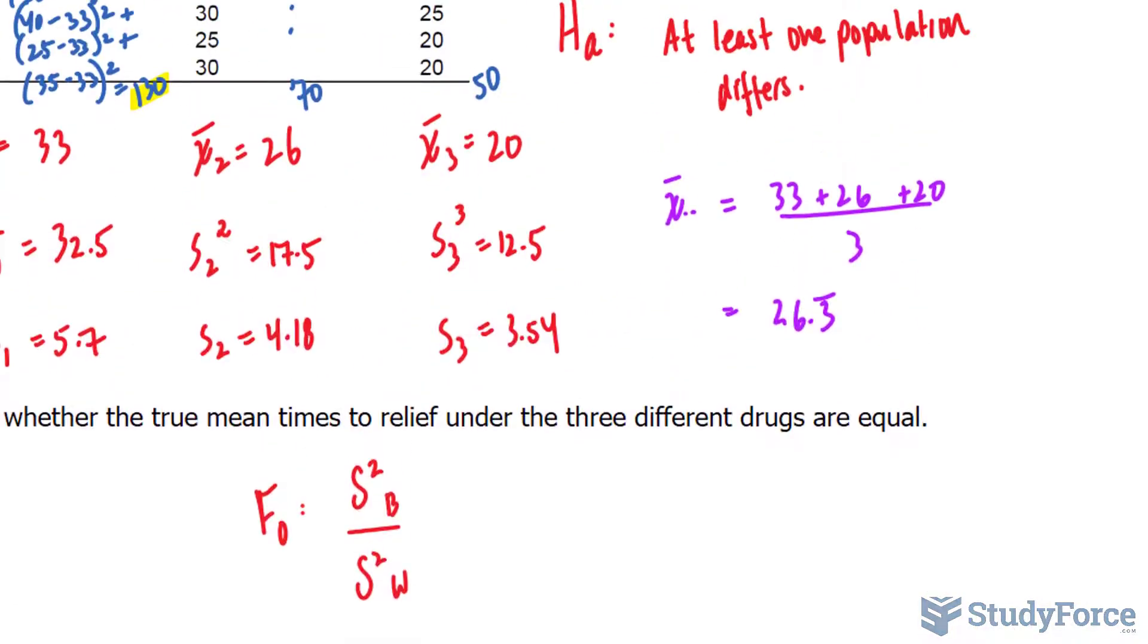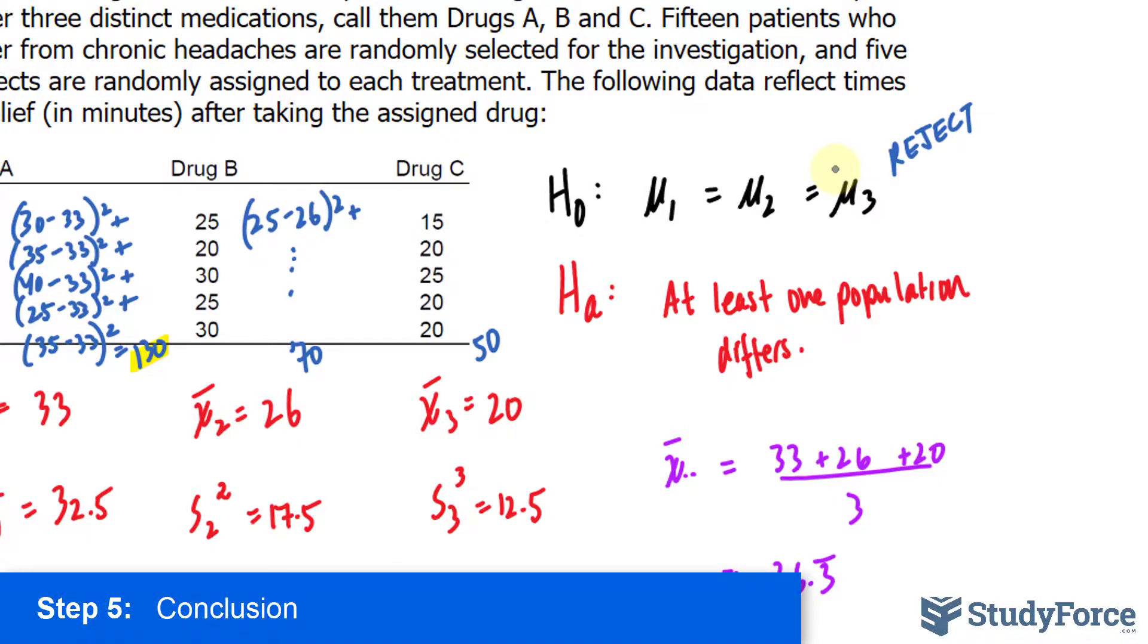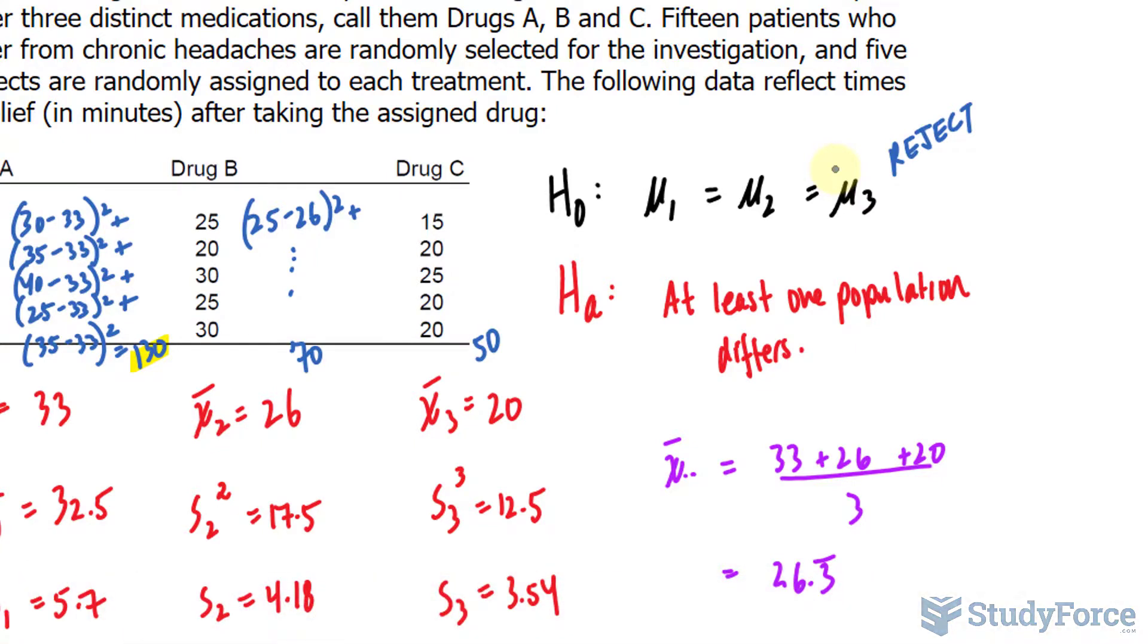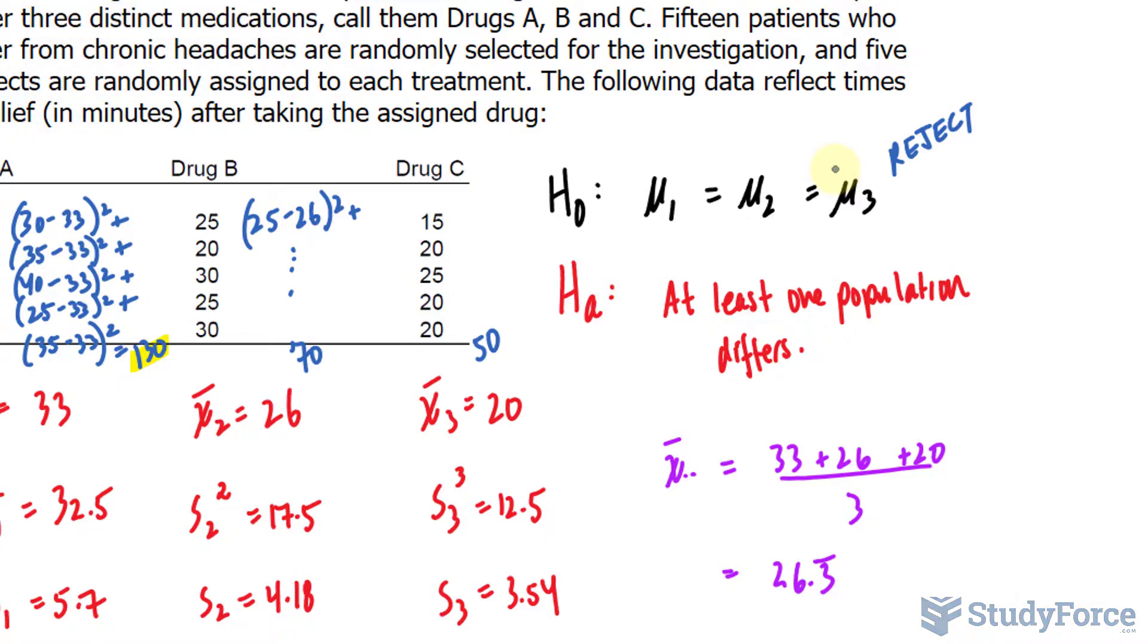The null hypothesis was that all of the means are the same. We have to reject this in favor of the alternative, which says that at least one population differs. The last step is to write a concluding statement, that since F observed is greater than F critical, we have sufficient evidence at 0.05 significance level to say at least one drug differs. You always have to conclude on the alternative hypothesis.